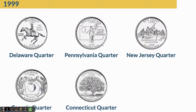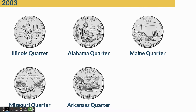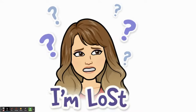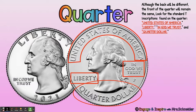Here are some of the quarters from the 50 state program. You might be feeling a little lost with all these different designs — how are you supposed to know what a quarter is? Although the back will be different, the front of the quarter will remain the same. Look for standard inscriptions like United States of America, Liberty, In God We Trust, Quarter Dollar. And it will still have George Washington's picture on the front.